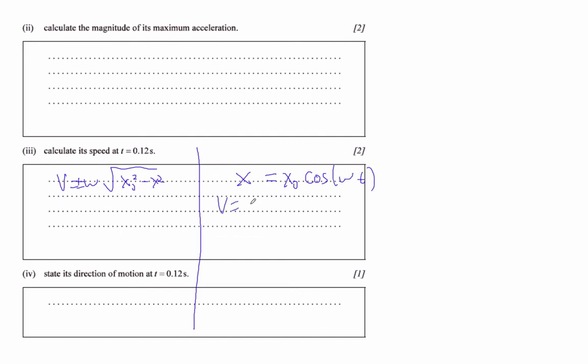v is going to be, what is it? V is just negative omega x naught sine omega t. And again, your omega is going to come from 2 pi divided by the period.